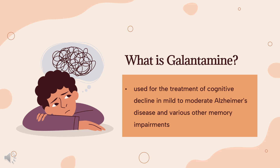Galantamine is used for the treatment of cognitive decline in mild to moderate Alzheimer's disease and various other memory impairments. Galantamine was isolated for the first time from bulbs of Galanthus nivalis, the common snowdrop, by the Bulgarian chemist Dimitar Paskov and his team in 1956. The first industrial process was developed in 1959.